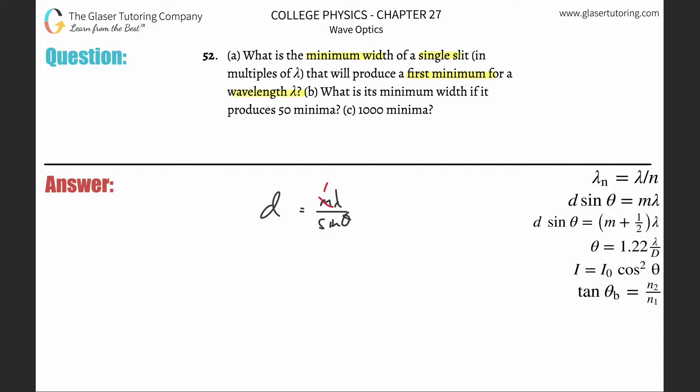The maximum value of sine theta is when theta is 90, right? And when theta is 90, what does this thing become? It becomes one.